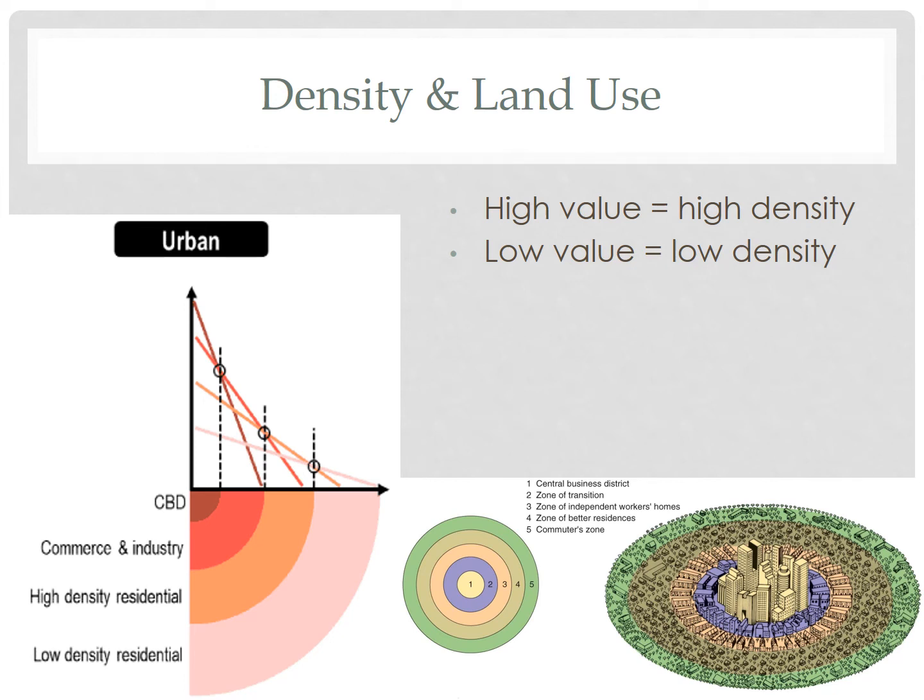Hello, Human Geographers. We are back at it again this evening. Tonight, we're going to look at the influence of population density on how land is used in cities, and we'll start with a little bit of a review of the bid-rent theory.